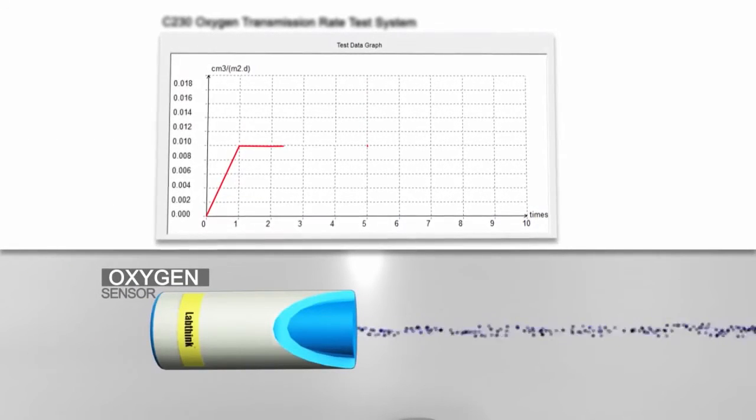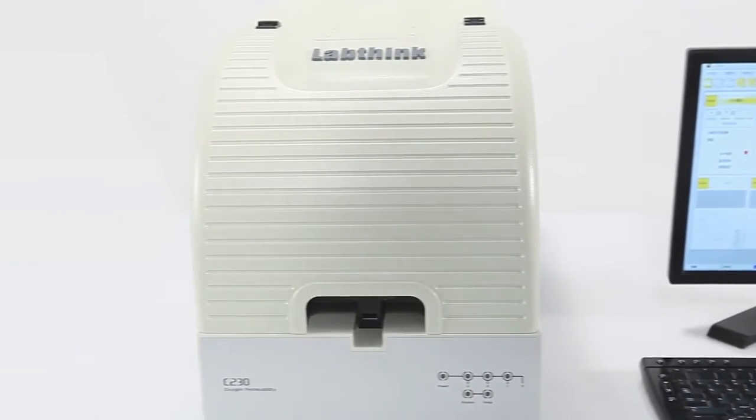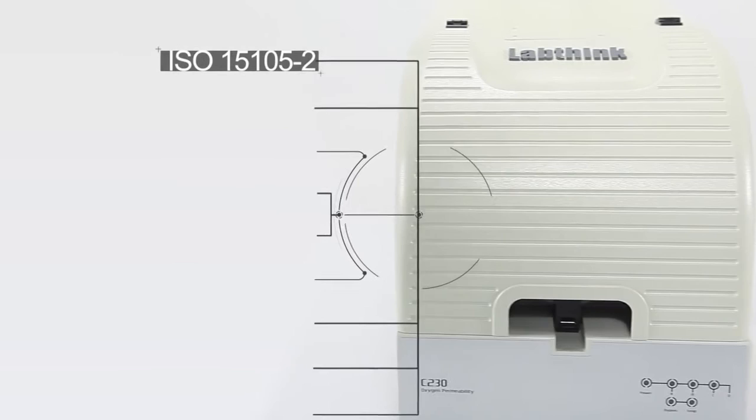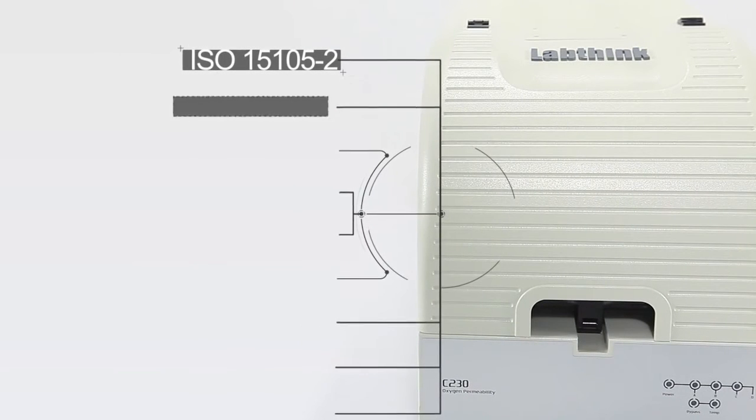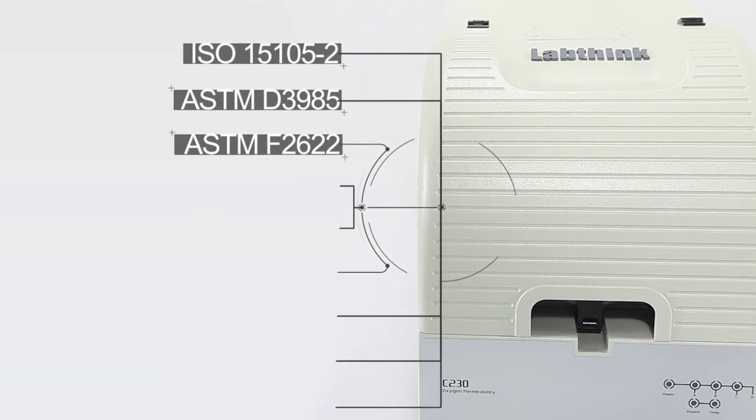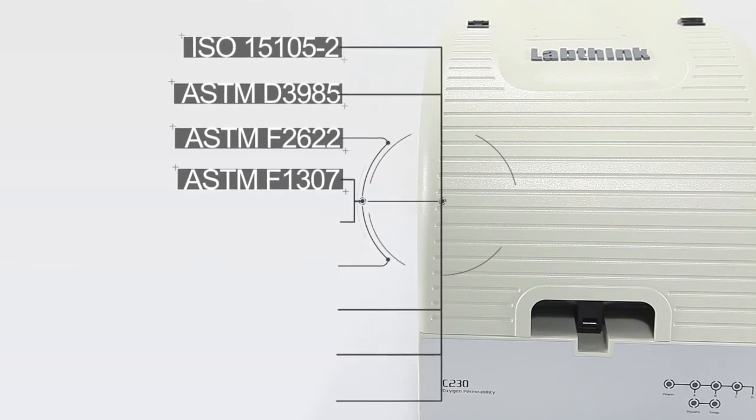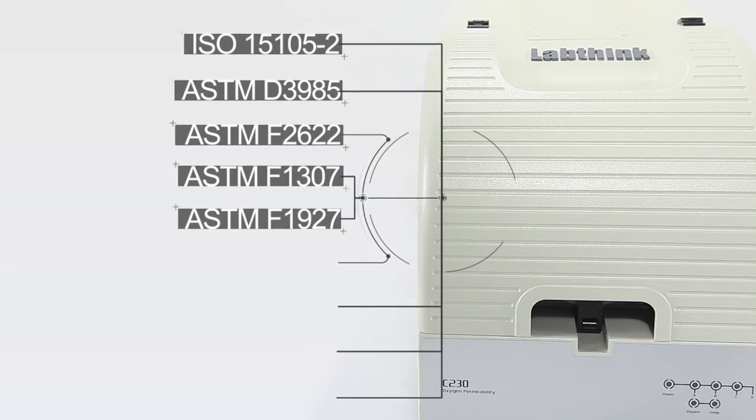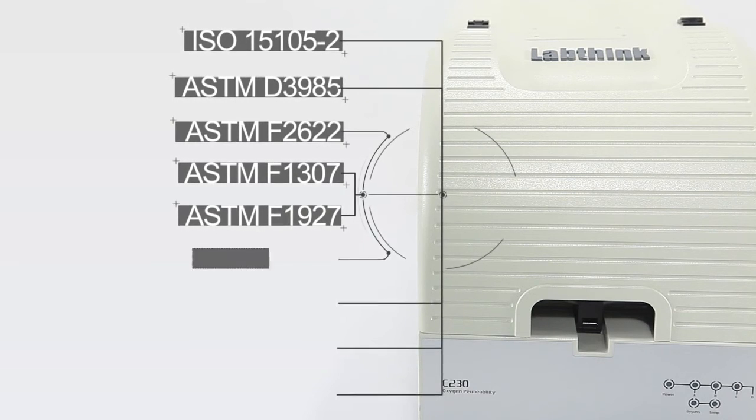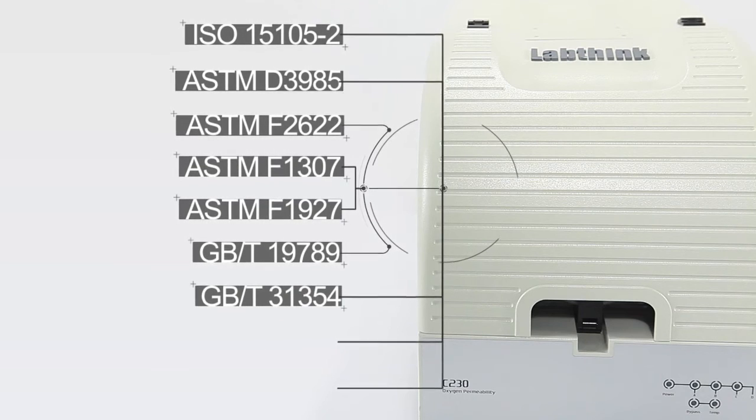The reference standards for C230 include ISO 15105-2, ASTM D3985, ASTM F2622, ASTM F1307, ASTM F1927, GB/T 19789, GB/T 31354, JIS K7126B, and YBB 00082003-2015.